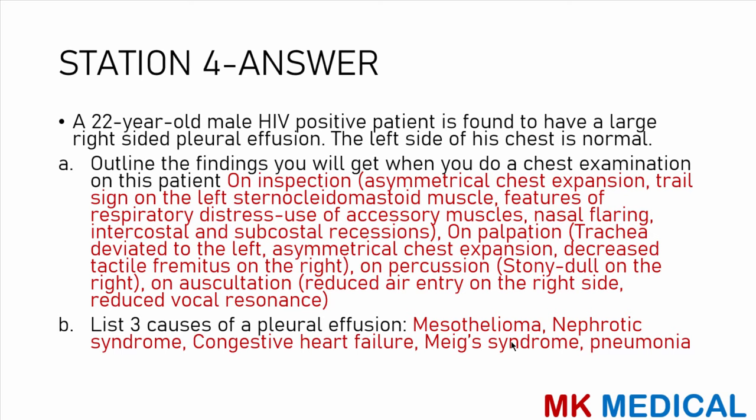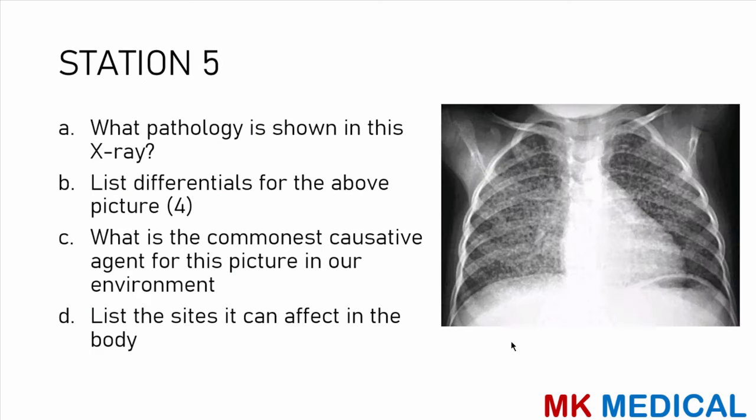Three causes of pleural effusions — these may result in a transudate or exudate. Causes include mesothelioma (a tumor of the pleural membranes), nephrotic syndrome, congestive heart failure, Meigs syndrome (a triad of ovarian tumor, pleural effusion, and ascites), and pneumonia with a parapneumonic effusion.